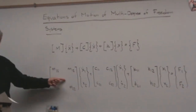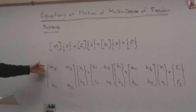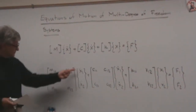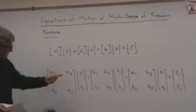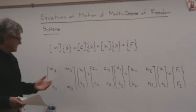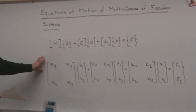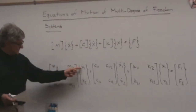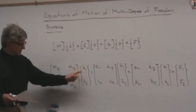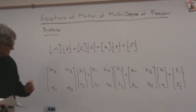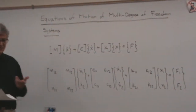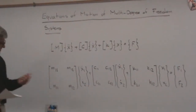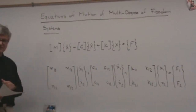In the special case of two degrees of freedom, the mass, damping, and stiffness matrices are two-by-two matrices. We have two degrees of freedom x1 and x2, and two forces. The degrees of freedom can be either displacements or rotations. So the problem of deriving the equations of motion reduces to the determination of the elements of these matrices.